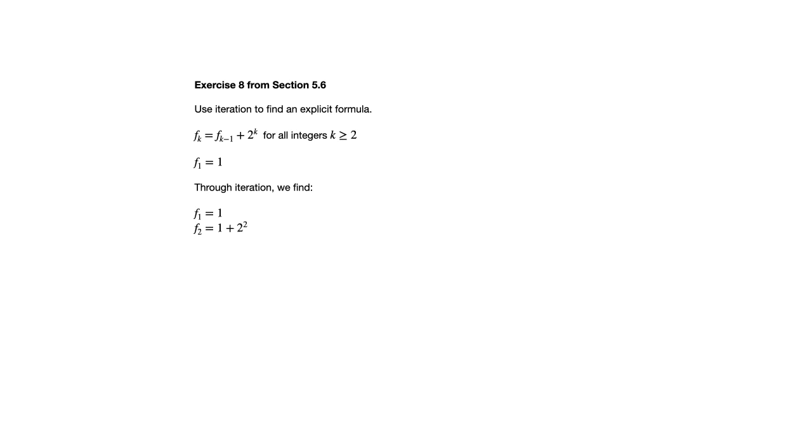We have f sub 1 equal to 1. F sub 2, according to that recurrence relation, would be 1 plus 2 squared. F sub 3 would take that and add 2 cubed to it, so we'd have 1 plus 2 squared plus 2 cubed. Notice each time we're adding a power of 2, and the power of 2 being added is determined by that index k.